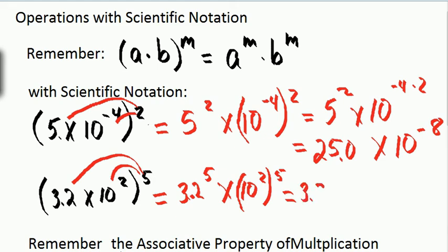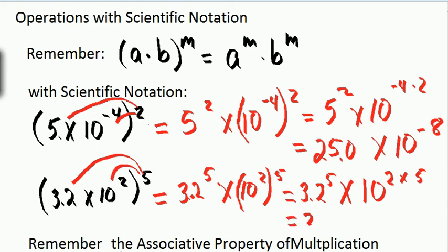3.2 raised to the 5th power times 10 to the second, all raised to the 5th power, gives 10 raised to 2 times 5 — I'm raising a power to a power — so I end up with 3.2 to the 5th power times 10 to the 10th power.